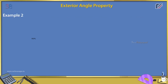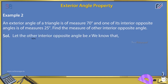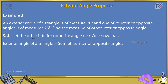Example 2: An exterior angle of a triangle measures 70 degrees and one of its interior opposite angles measures 25 degrees. Find the measure of the other interior opposite angle. Solution: Let the other interior opposite angle be x. Using the exterior angle property: 70° = 25° + x, so x = 70° − 25° = 45°.